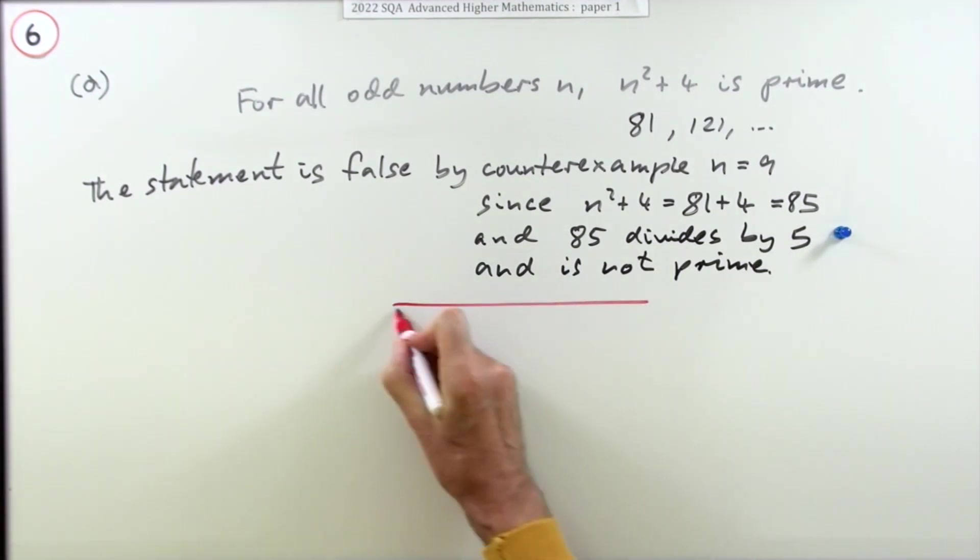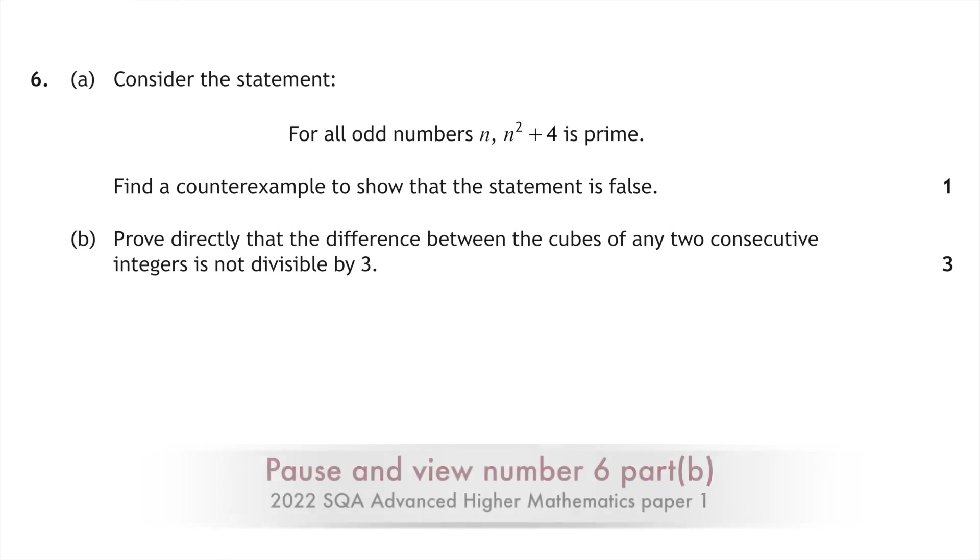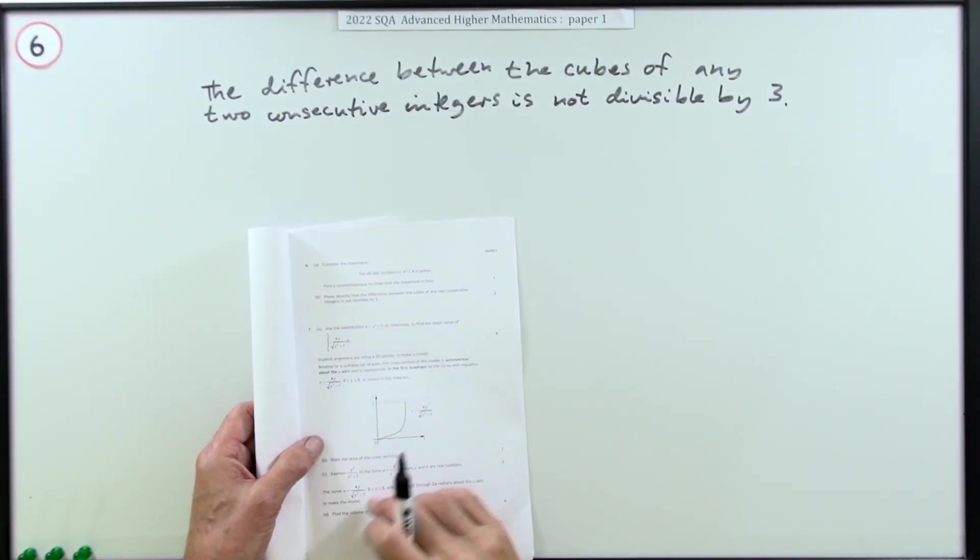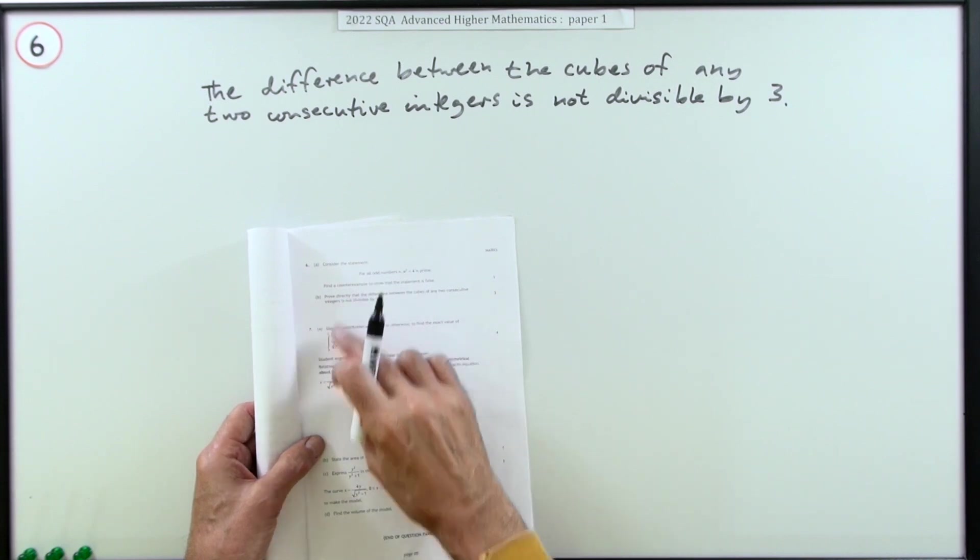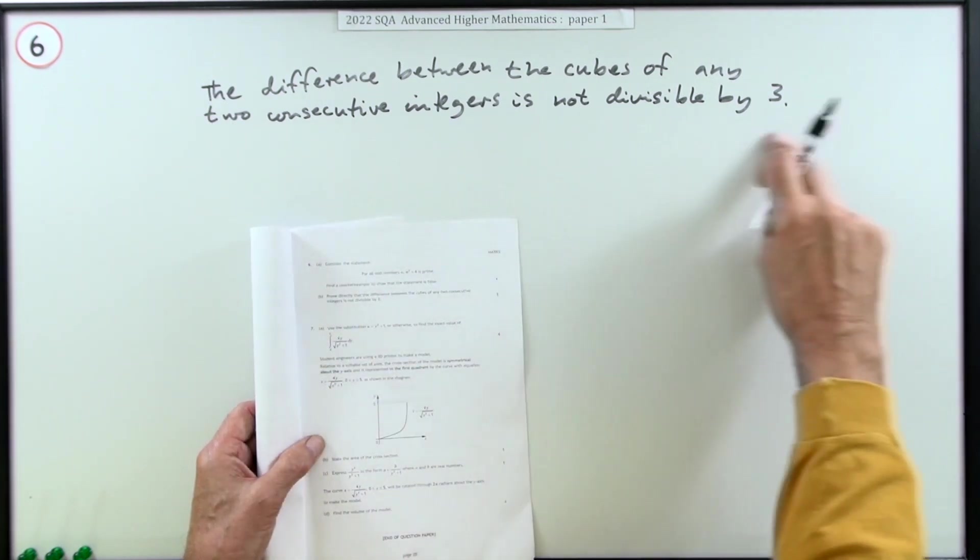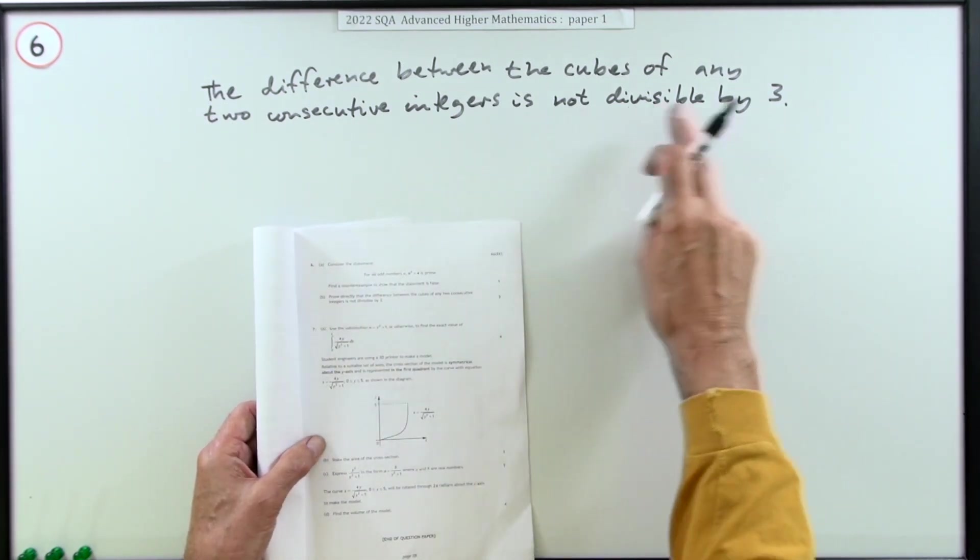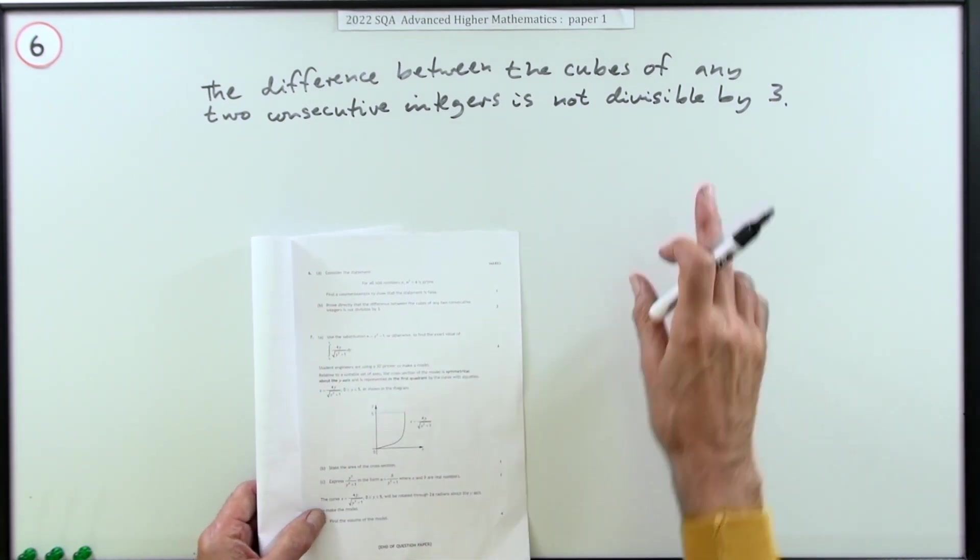Part B for three marks. This time you have to prove directly that this statement is true: the difference between the cubes of any two consecutive integers is not divisible by three.